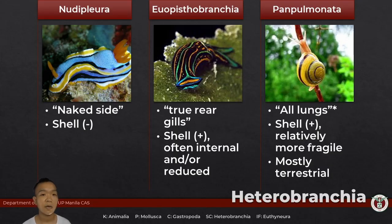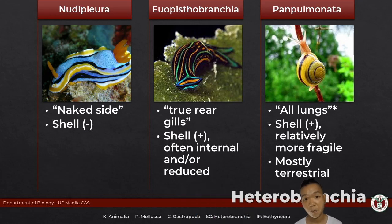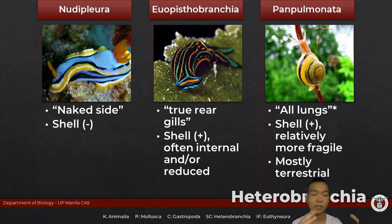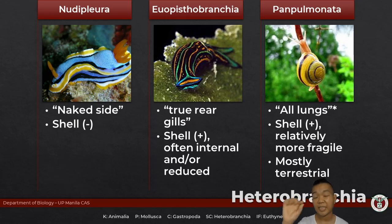Members of Nudiplura do not have an external shell. For Euthyneura branchia, they still have a shell, but often it's either reduced or internalized. For Panpulmonata — all lungs — it's kind of a misnomer because not all pulmonates are air-breathing. Many of them are terrestrial, but those that are aquatic are typically found in freshwater habitats. As for their shell, it's still present but it's thinner and more fragile, serving a different purpose.